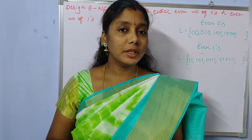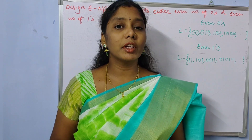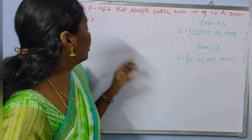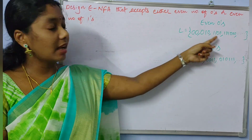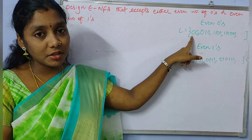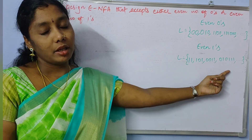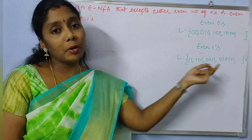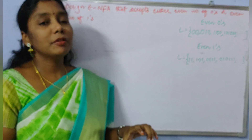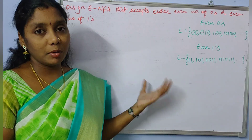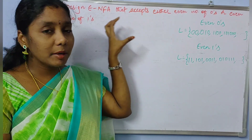Welcome back to the channel. In this video I am going to explain an example of an epsilon NFA for even number of zeros or even number of ones. For even number of zeros, every string in that language should consist of an even number of zeros. Similarly, for even number of ones, every string should consist of an even number of ones. The epsilon NFA should accept strings consisting of either even number of zeros or even number of ones.